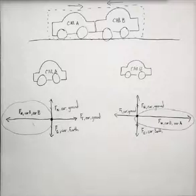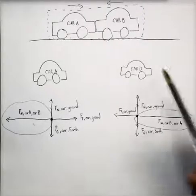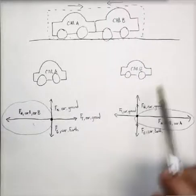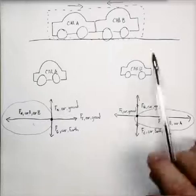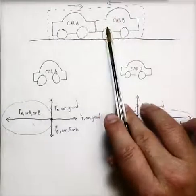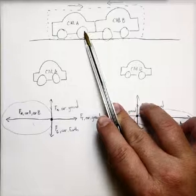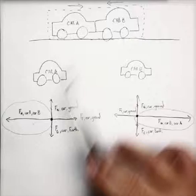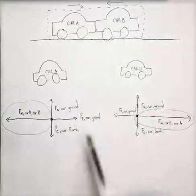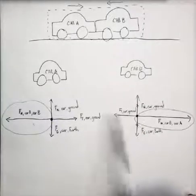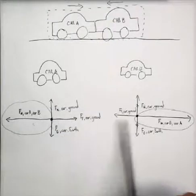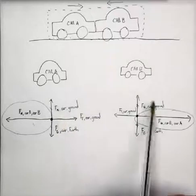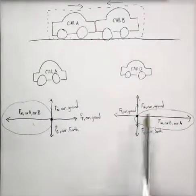But more importantly, I want you to notice that they happen on different objects. And this is going to be true for all Newton's third law force pairs when you have multiple things like this. When two things come in contact, the force pair from Newton's third law, one force will act on one object and the other force acts on the other. Remember, a force is an interaction between two objects. If they acted on the same object, they would cancel each other out and nothing would happen. So we have this on car A, the other is on car B. Very important fact to remember.